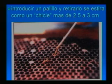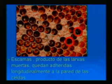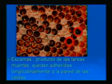El chicle se estira más de 2,5 a 3 centímetros. Esta es una de las principales características que permite diferenciar la loca americana de las demás enfermedades, junto con las escamas que son muy difíciles de extraer y están muy fuertemente adheridas. Estos son los dos síntomas principales que nos permiten confirmar que estamos realmente ante esta enfermedad.